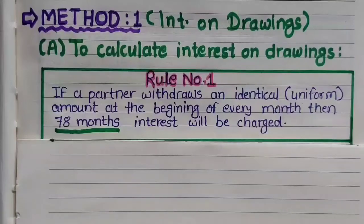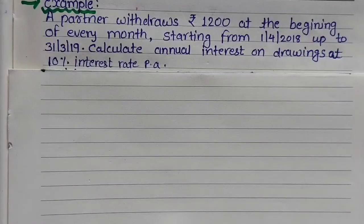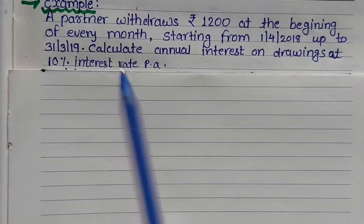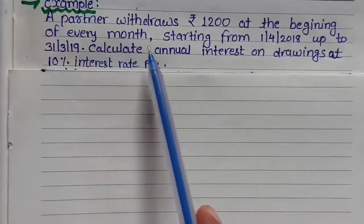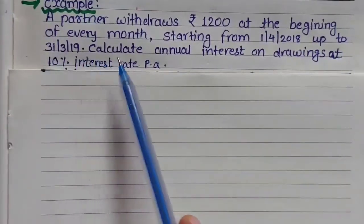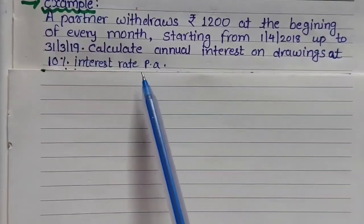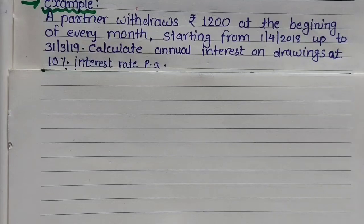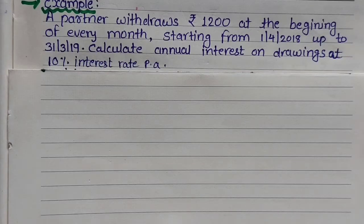Friends, you might be thinking — 78 months? We know a year has only 12 months, so where did 78 months come from? Let me explain with an example. A partner withdraws Rs. 1,200 at the beginning of every month, starting from 1st April 2018 up to 31st March 2019. Calculate annual interest on drawings at 10% interest rate per annum. If an ordinary student were given this sum, they would multiply 1,200 by 12 to get annual drawing of Rs. 14,400, and then calculate 10% of that, arriving at Rs. 1,440.